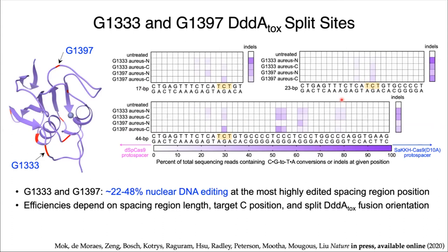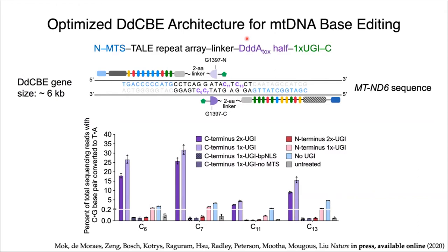Having identified the active splits, our next step was to move towards a CRISPR-free platform. We fused each half of DddA to a TALE protein pair previously reported to bind to the mitochondrial ND6 gene. After a few reiterations of the architecture, we settled on this optimized version: starting from the N-terminus, you have the mitochondrial targeting signal to localize the editor into the mitochondria, a TALE repeat array to dictate the DNA binding site, a two-amino-acid linker, your DddA half, and one copy of a uracil glycosylase inhibitor protein (UGI) to suppress uracil repair. Together, these two halves form the mitochondrial base editor, which we call DdCBE, with a gene size of slightly under six kilobases.